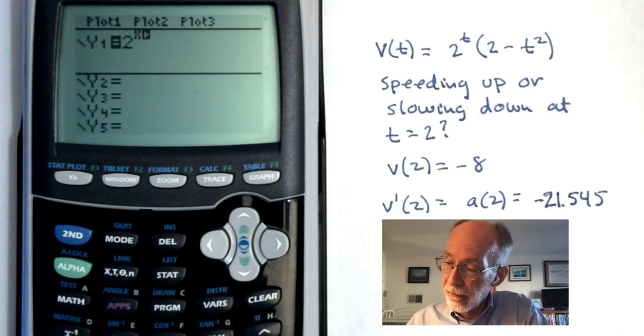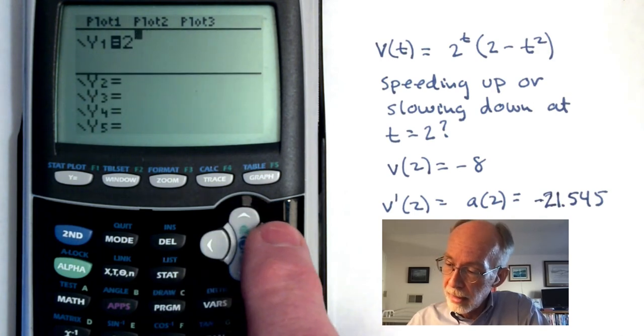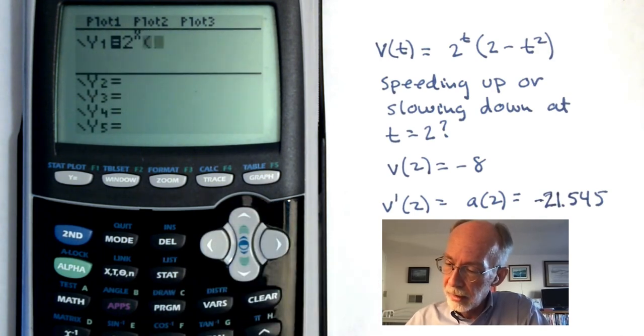So I can go up to y1 and I can enter my function. So this was 2^x quantity, 2-x^2.